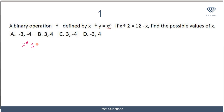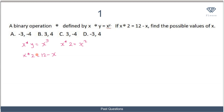We are told that x★y = x^y. Now we are told that x★2 = 12 minus x. Based on this expression, we can evaluate x★2, which gives us x^2. So we know that x★2 = x squared, and we also know that x★2 = 12 minus x, so we can equate these two terms together.